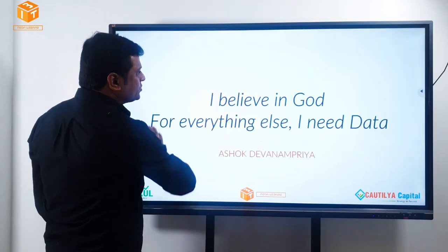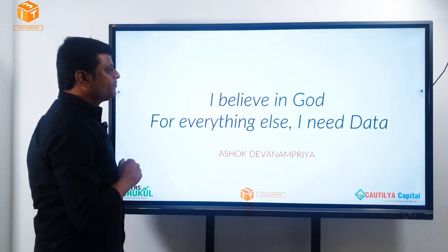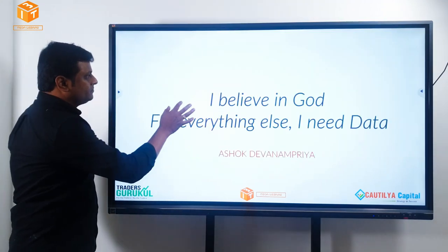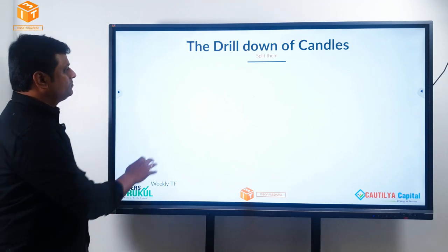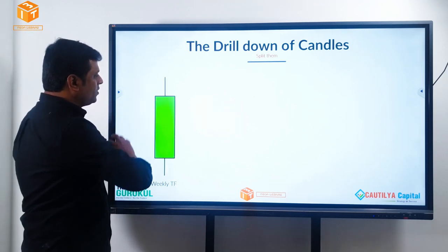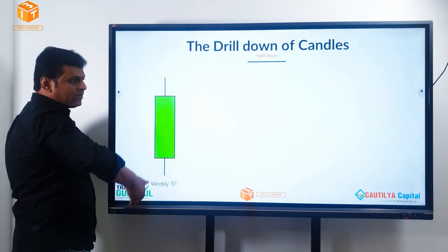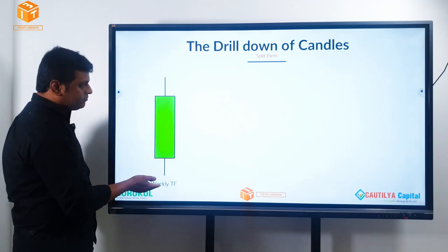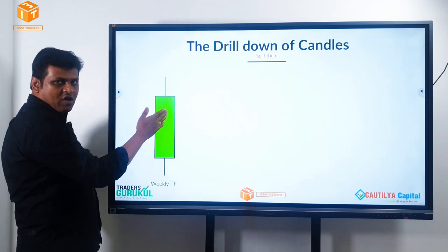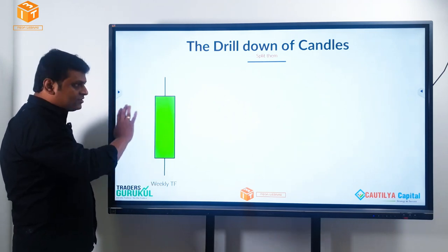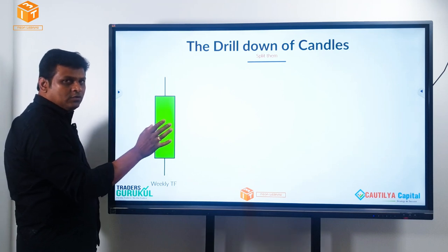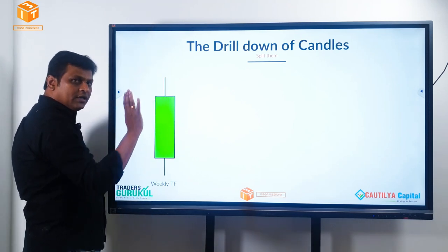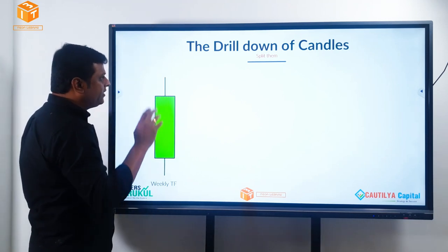Let's quickly get into the story. A beautiful momentum candle on a weekly time frame, strong momentum — green color tells it is a bull candle. Who is under control? Buyers are absolutely under control.